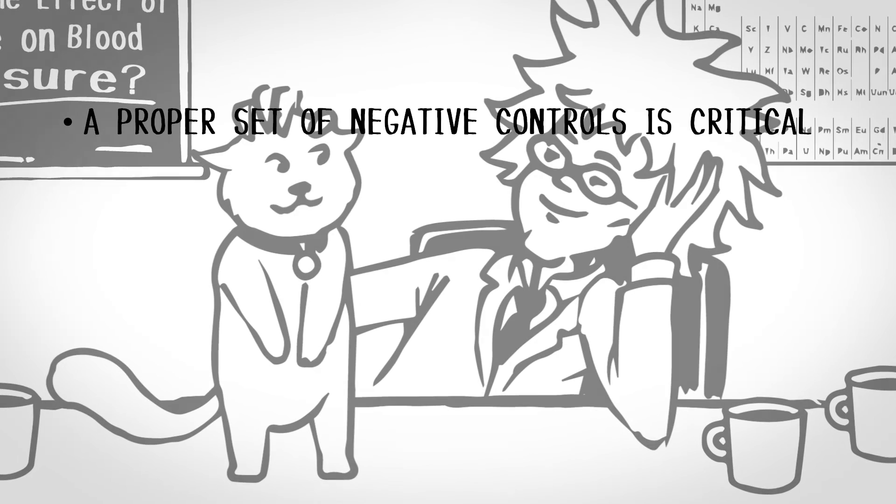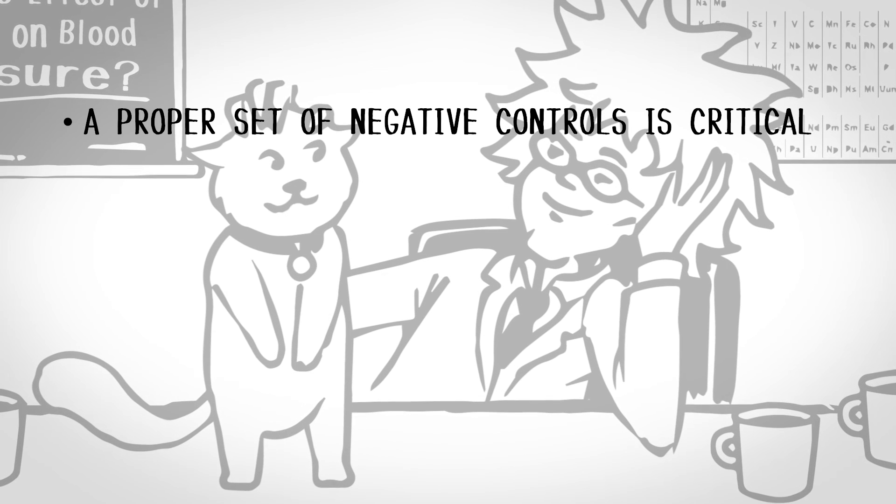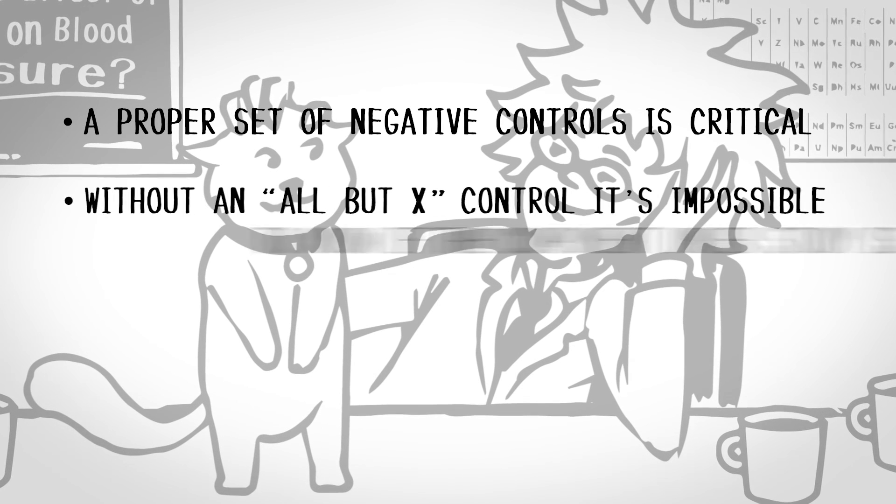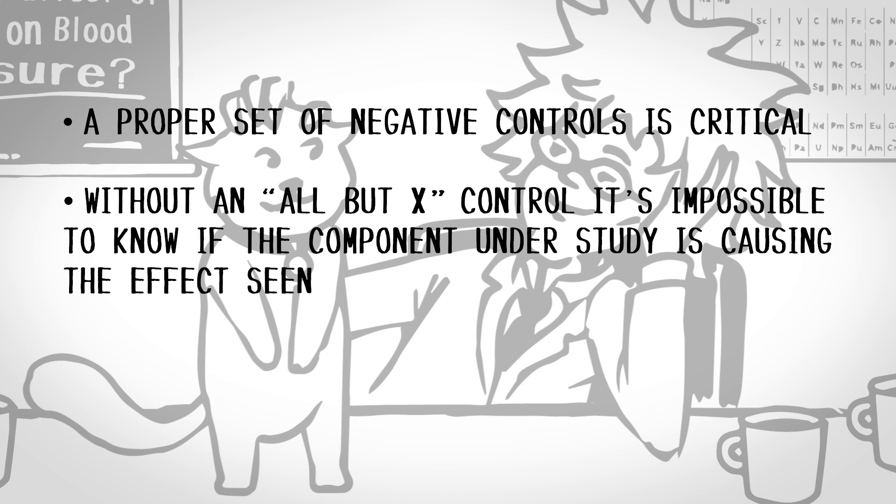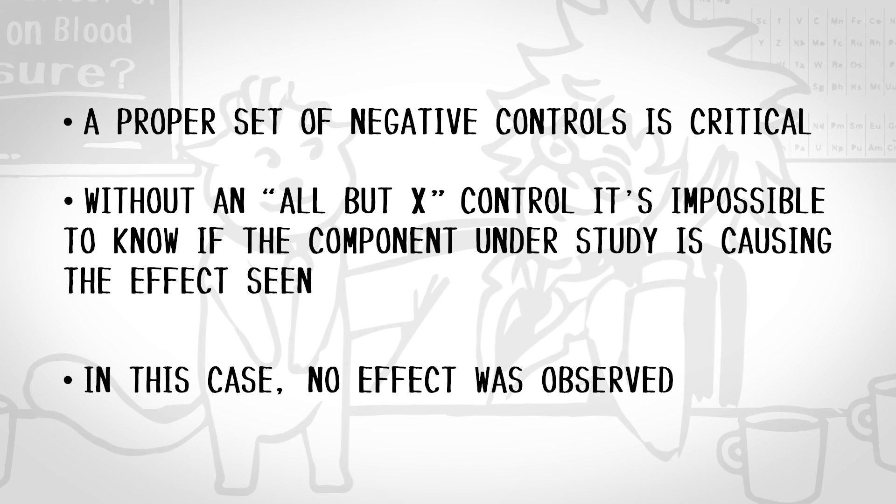A proper set of negative controls is critical to determine if there is an effect in an experiment. Without an all-but-X control, where X is what's being studied, it's impossible to know if the component under study is causing the effect seen. In this case, in response to the question, what is the effect of caffeine on blood pressure, no effect was observed.